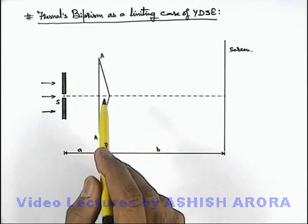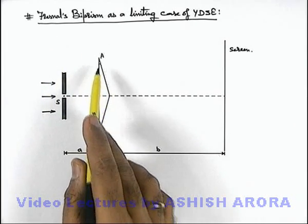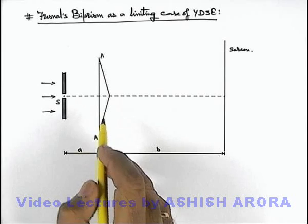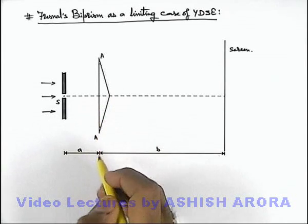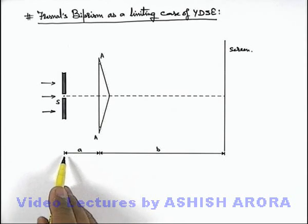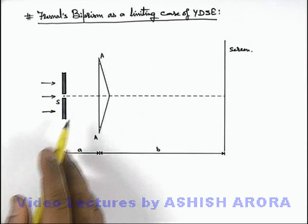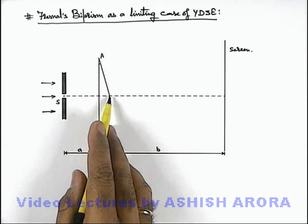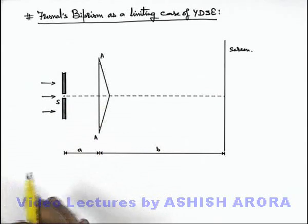This Fresnel biprism is made by joining two small angle right angle prisms at their base, which you can see here. From this biprism at a distance 'a', we have kept a single slit which is in front of the joint base of the two prisms.